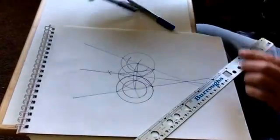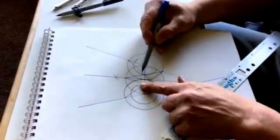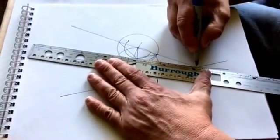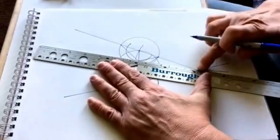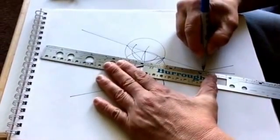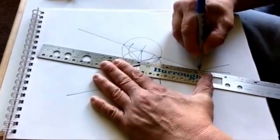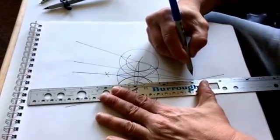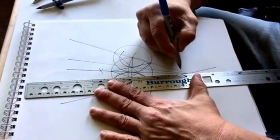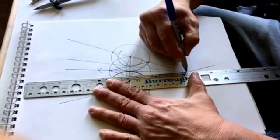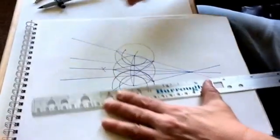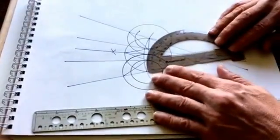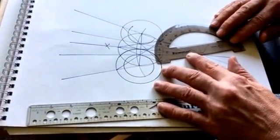So we create the circle where it intersects the arc of the inner circle. Now we simply just draw from the point of origin here straight through the point of intersection of the inner circle.